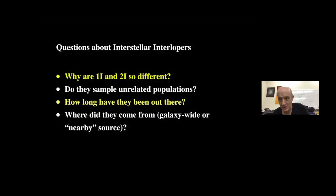So there are many questions. There are not many answers. The biggest one for me is why are these two things so different? Why is one eye so different from two eye? Do they, in fact, sample unrelated populations? Could it be that within two years, we found two different interstellar populations passing through the solar system? How long have these things been out there? Once they're out, they never hit a star. They basically don't even come close to stars on a 10, 100 million year timescale. And where do they come from?